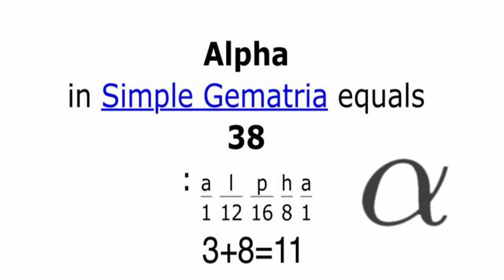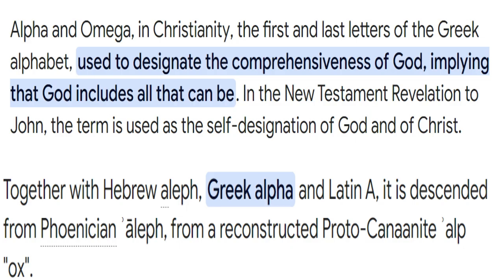Remember, alpha was part of the grand theory of everything — basically the judge, the jury, everything. Sounds like God, right? So it's important: alpha, the first. And obviously it is 38, which adds to 11. That got me automatically thinking of alpha and omega. In Christianity, the first and last letters of the Greek alphabet are used to designate the comprehensiveness of God, implying that God includes all that can be. In the New Testament, Revelation to John, the term is used as a self-designation of God and Christ.